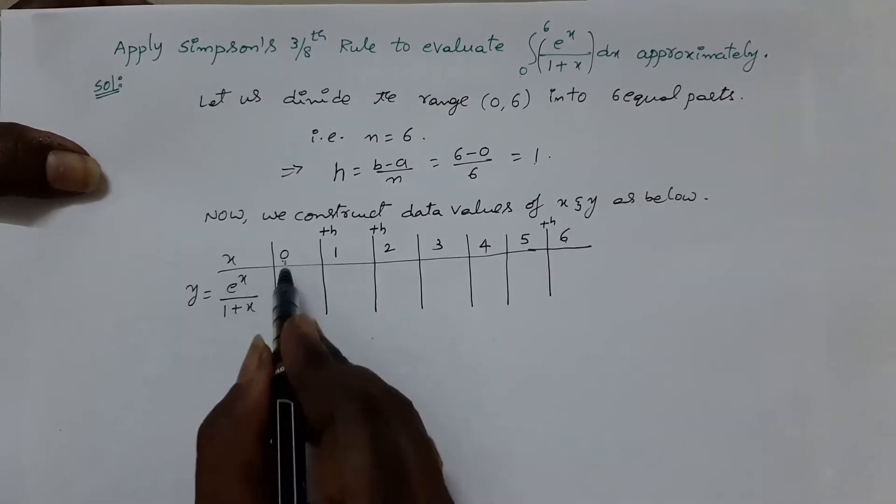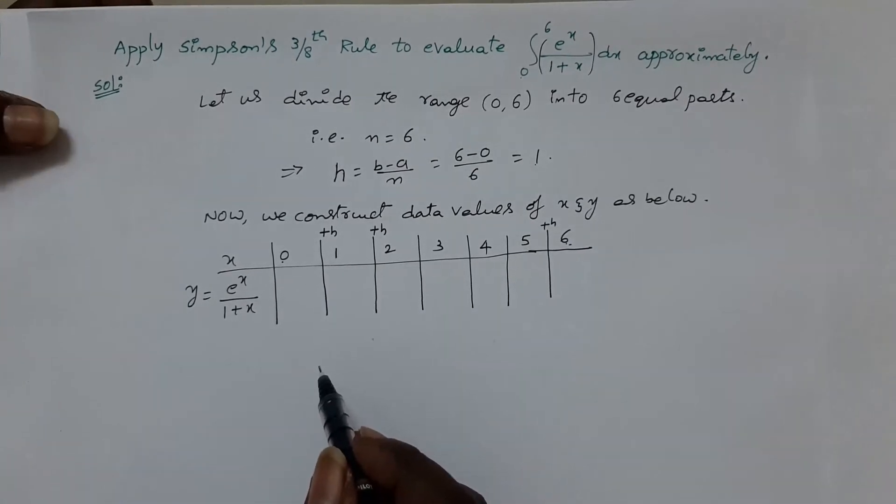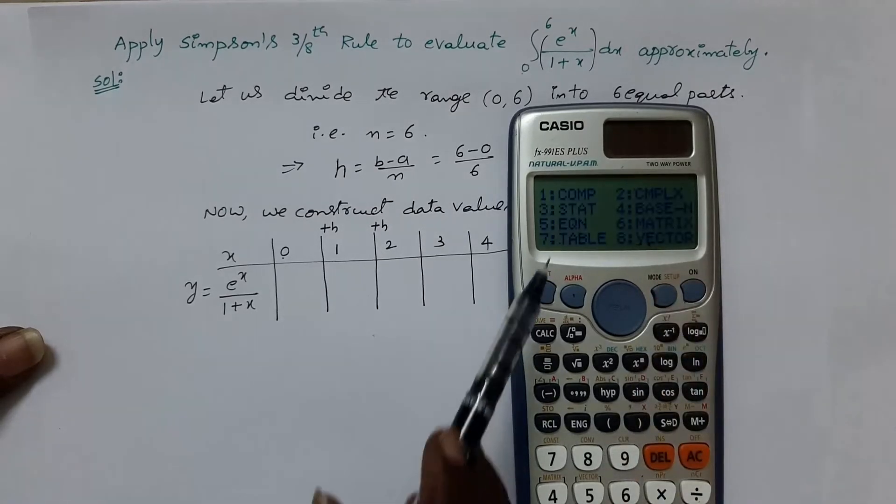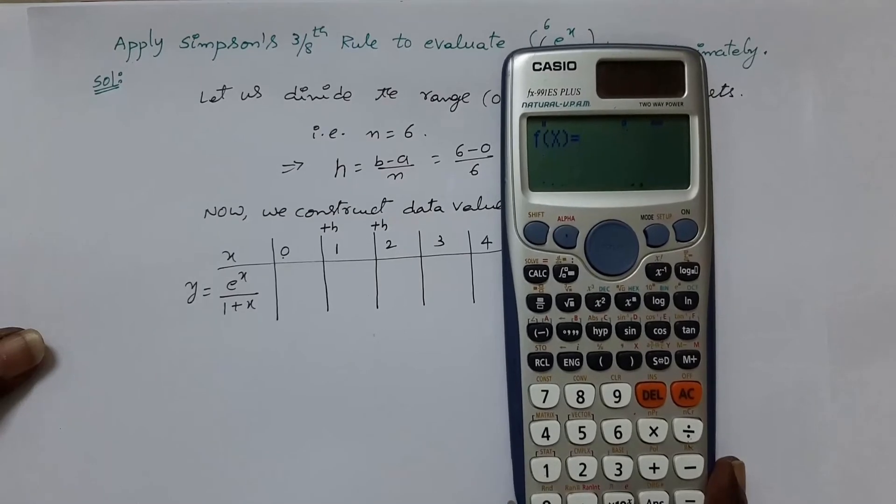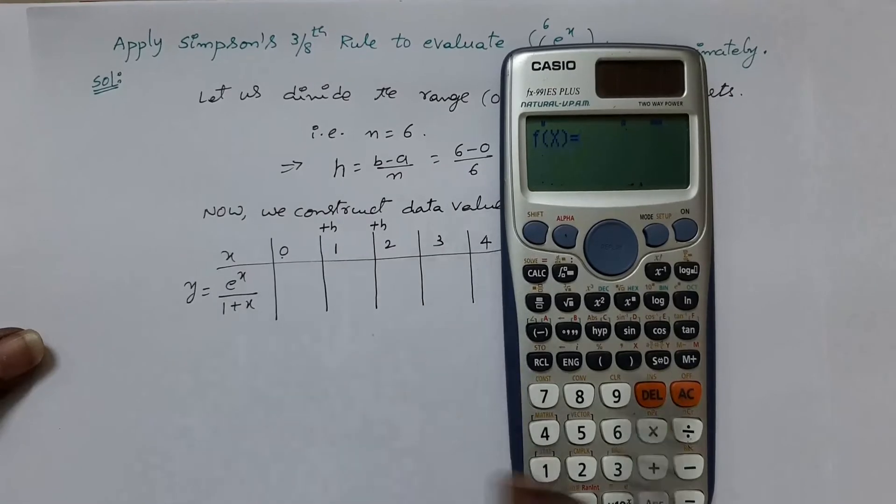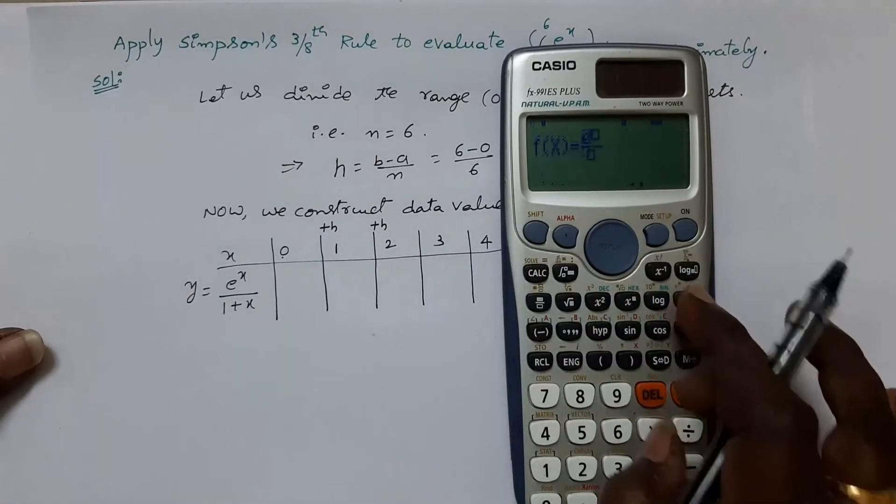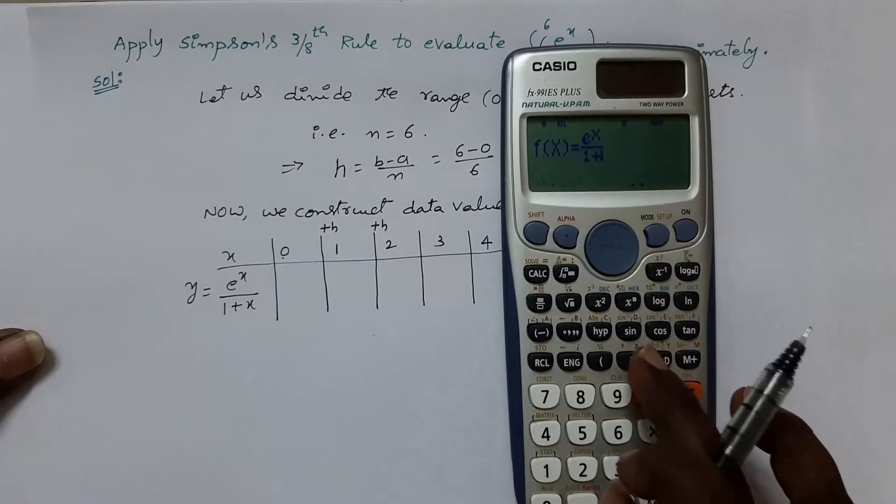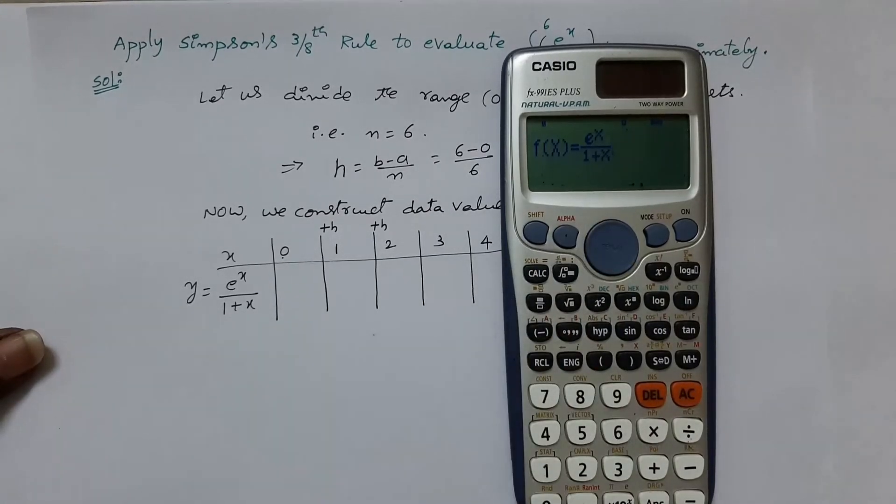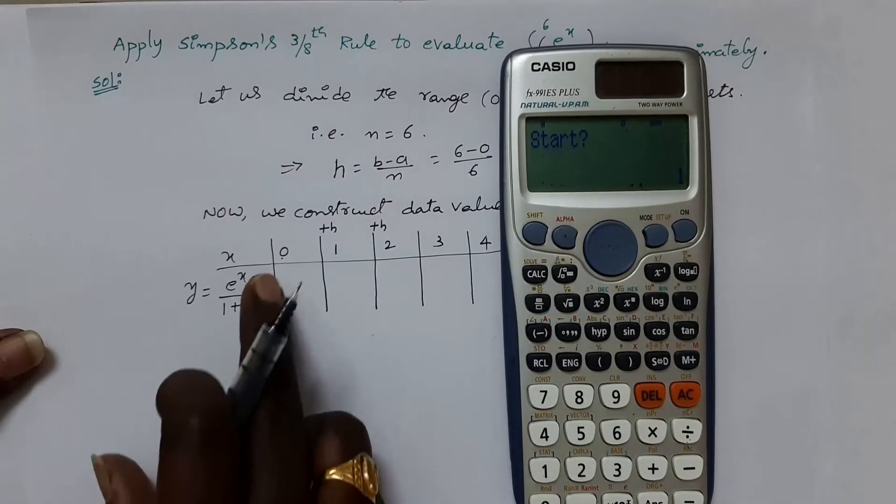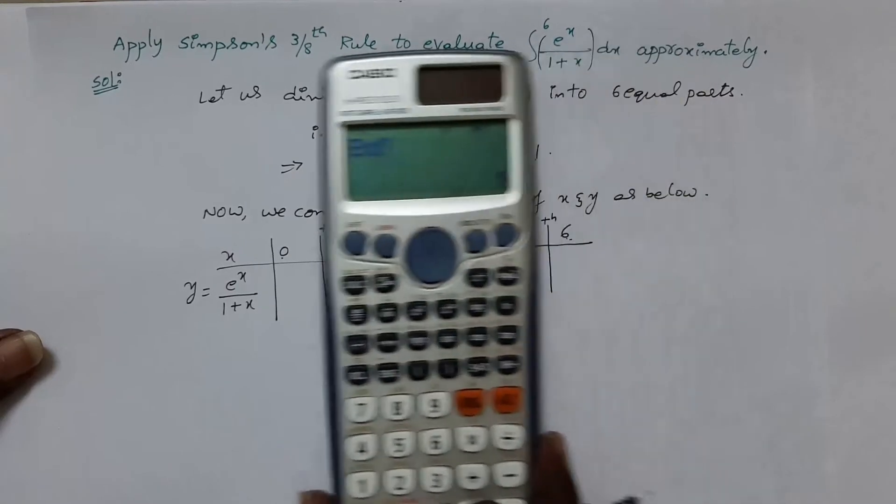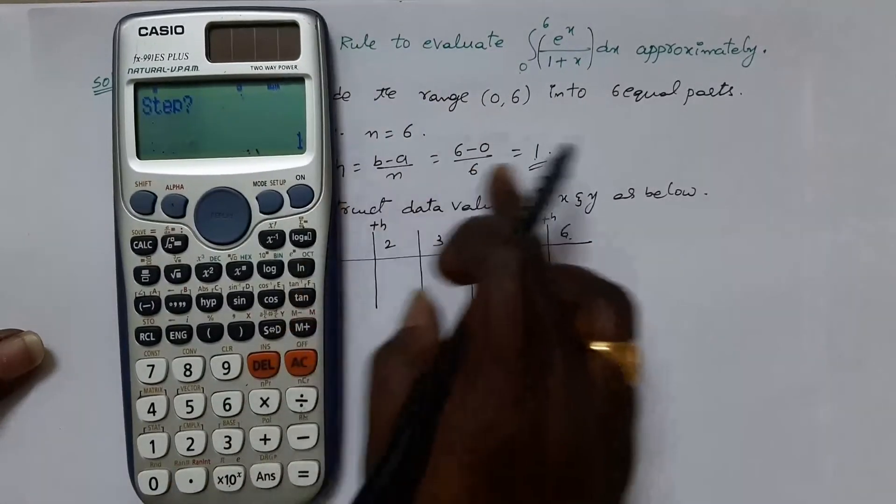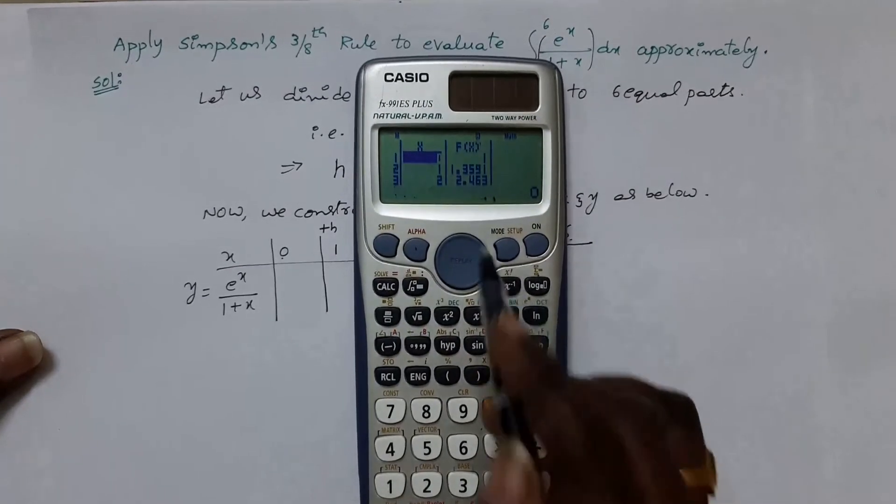Now, how to calculate the functioning value of y at various values of x by using scientific calculator? Mode table which is 7th option. We have to represent e power x by 1 plus x now. Take this symbol. Shift ln power x can be written as rcl this bracket. Division 1 plus x, rcl this one. So, I entered the given function calc is equal to. What is the starting value of x? 0 is equal to. What is the ending value of the x? Which is the upper limit, it is 6. What is the step size in the given problem? h value is 1. So, you can give 1 again. This is the data.